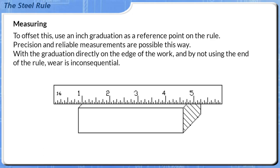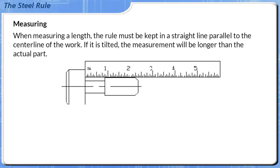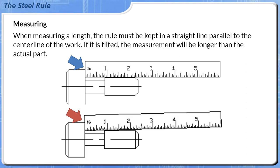To offset this, use an inch graduation as a reference point on the rule. Precision and reliable measurements are possible this way. With the graduation directly on the edge of the work, and by not using the end of the rule, wear is inconsequential. When measuring a length, the rule must be kept in a straight line parallel to the center line of the work. If it is tilted, the measurement will be longer than the actual part.